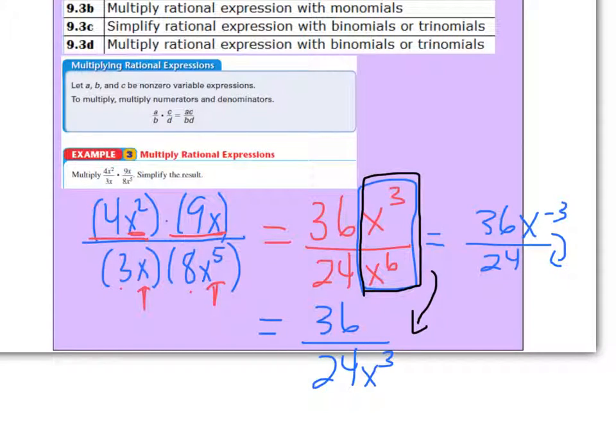The last thing you need to do is to check and see, can you pull out any common numbers from 36 and 24. The largest multiple they have in common would be a 12. So you can actually pull a 12 out of both. 36 divided by 12 would be 3. 24 divided by 12 is 2. And the x cubed is on the bottom.